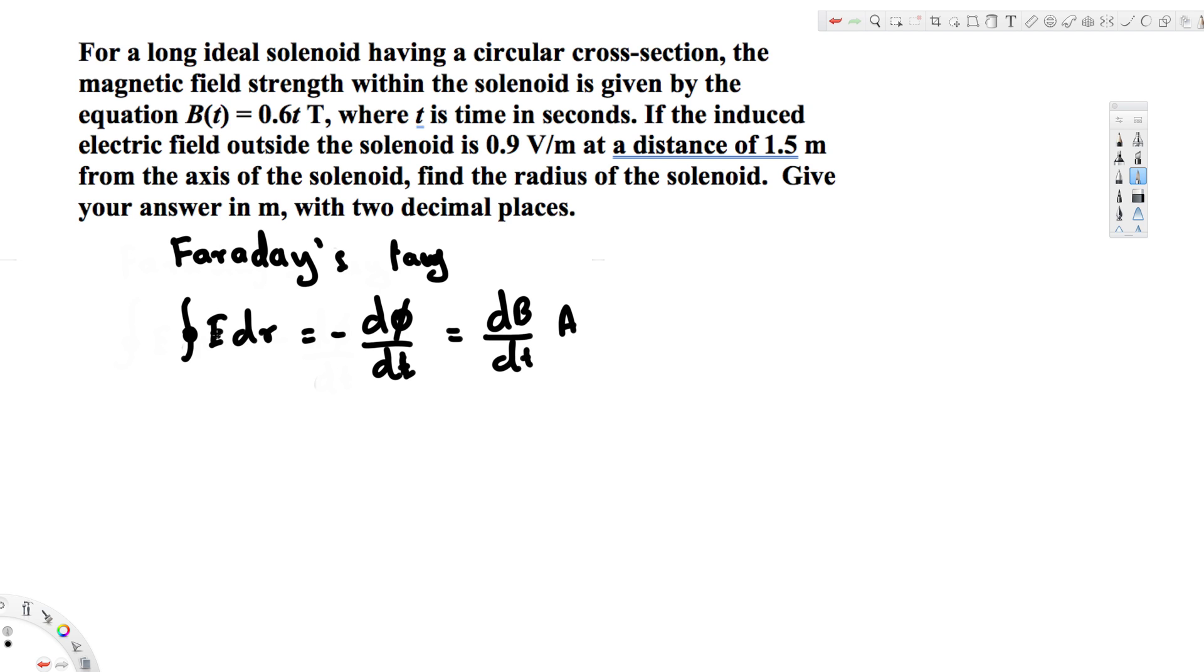changing magnetic field times the area. Now, if you integrate this one with respect to r, that's going to give you 2πr, since we are dealing with a circle. This is going to be 2πr, and then here dB by dt is going to remain the same, and area of the circle is going to be